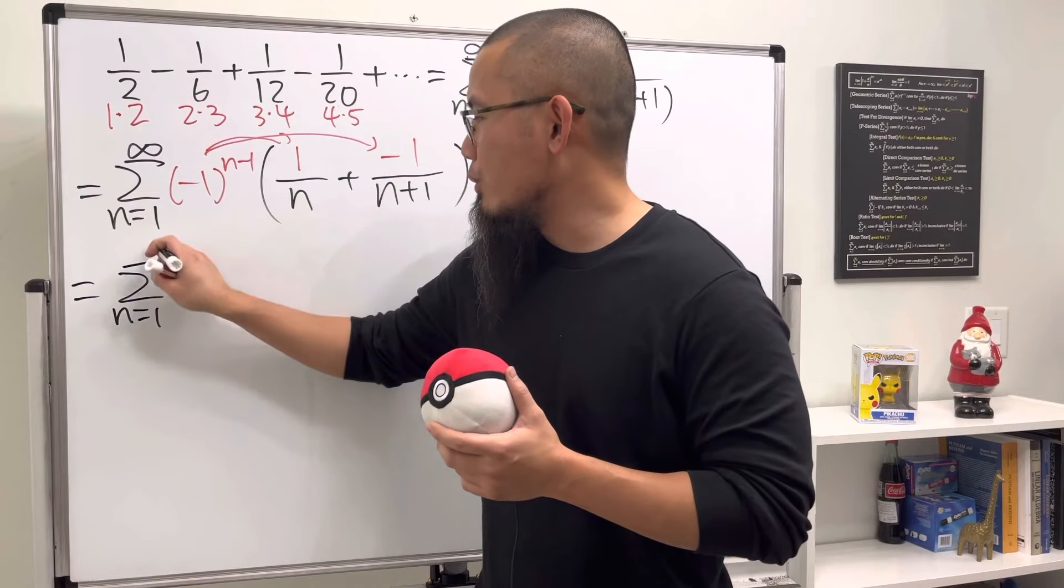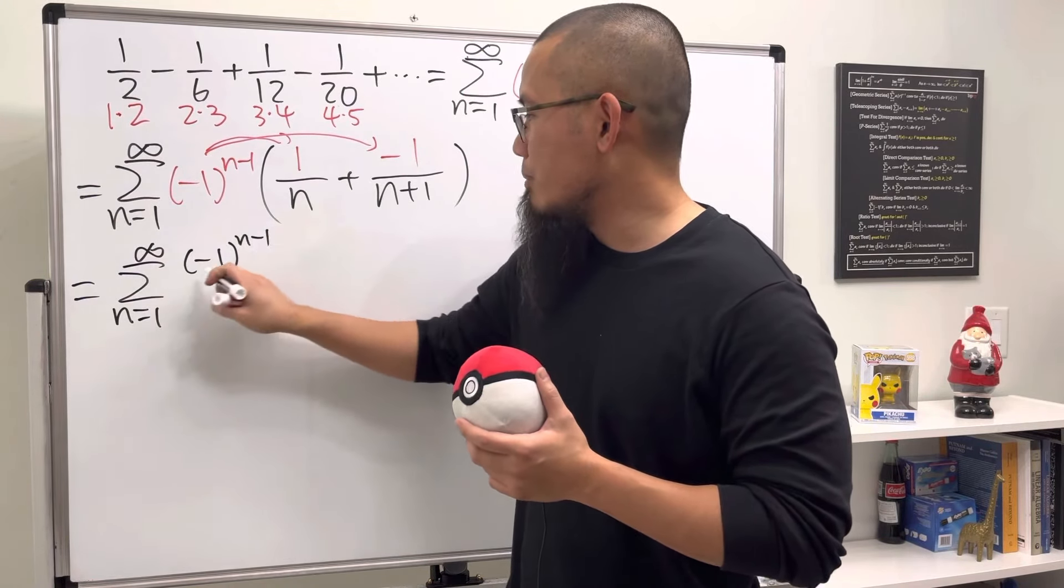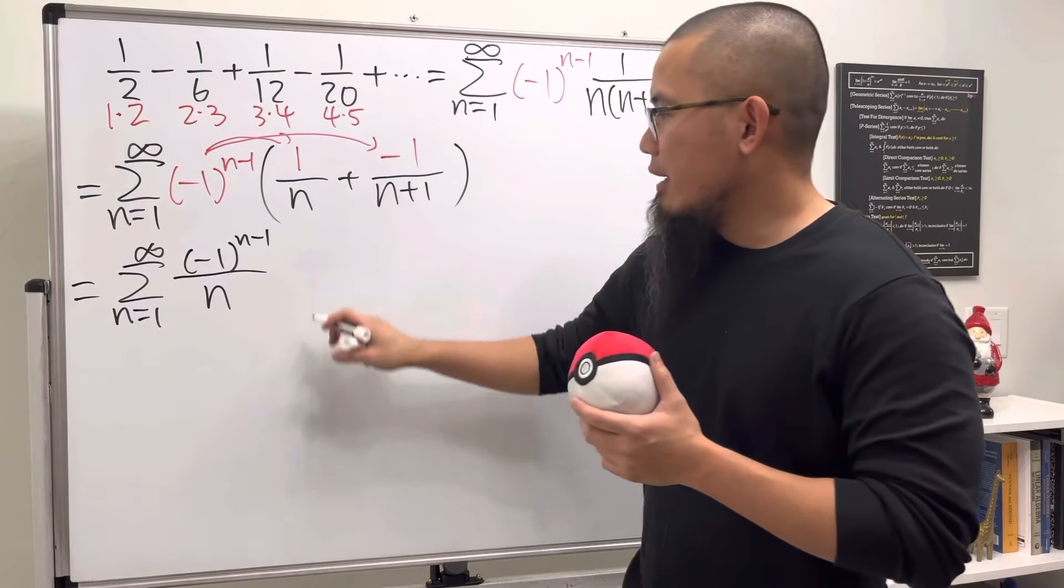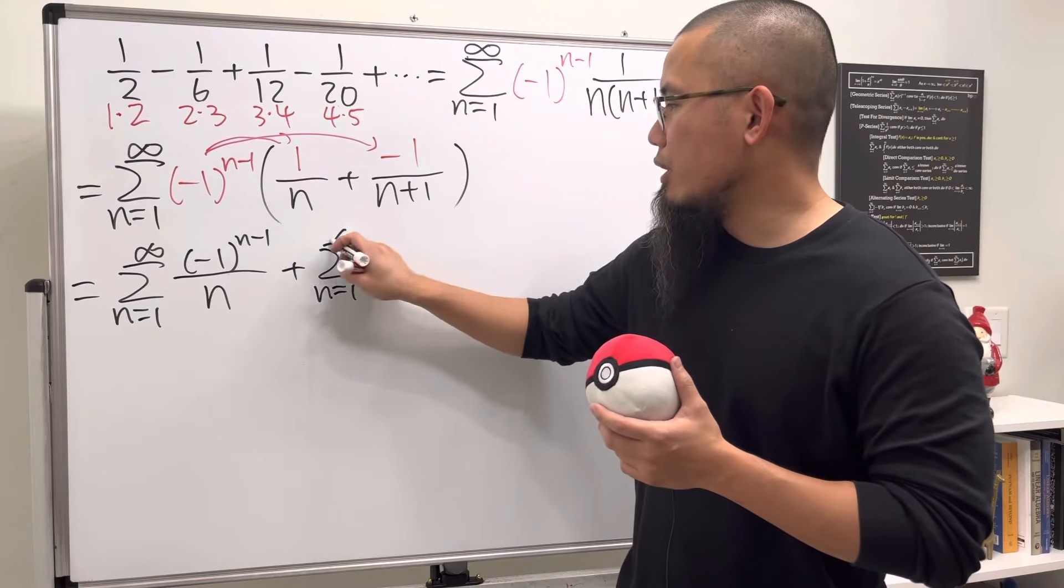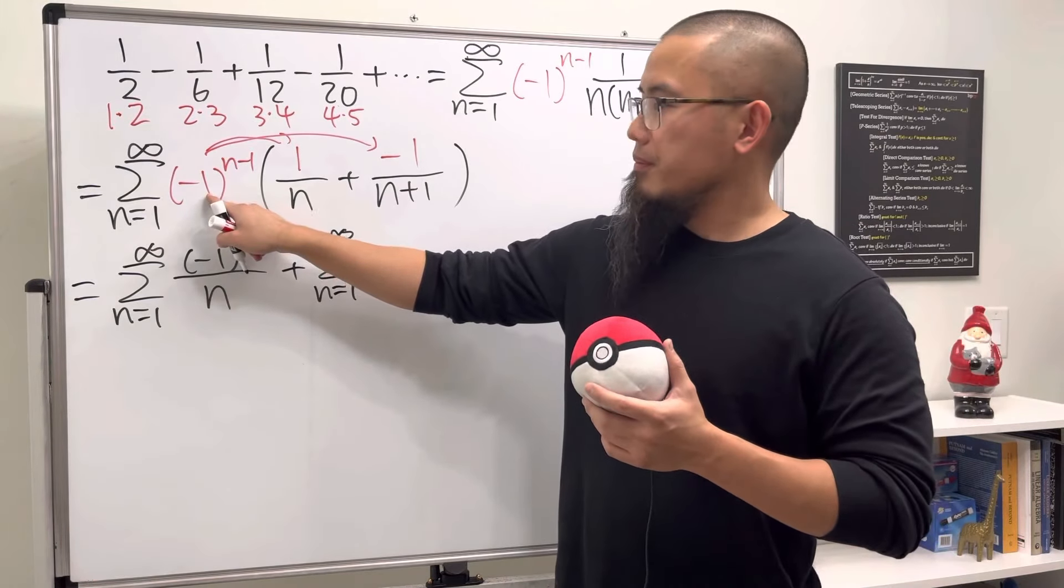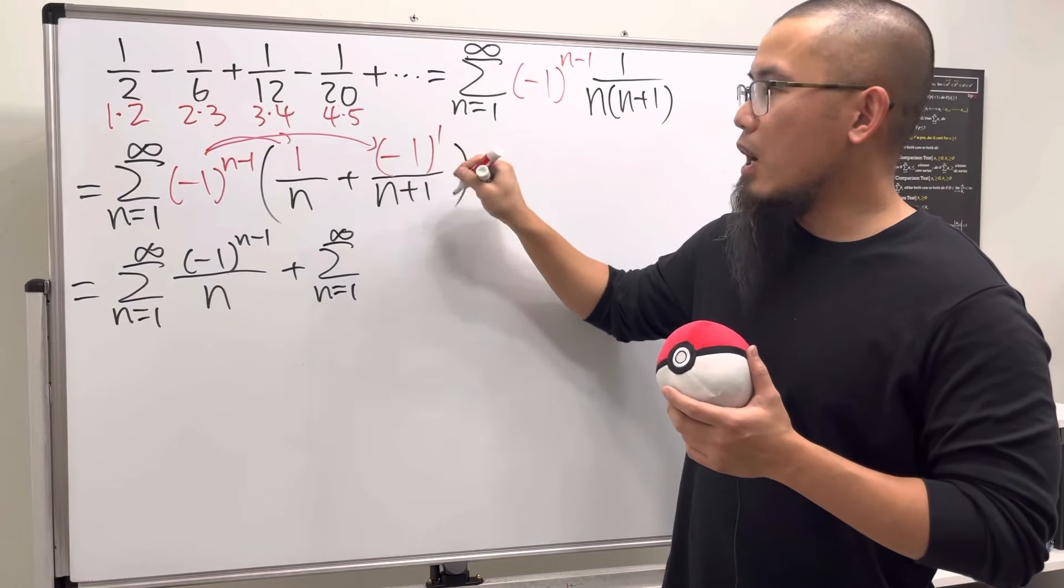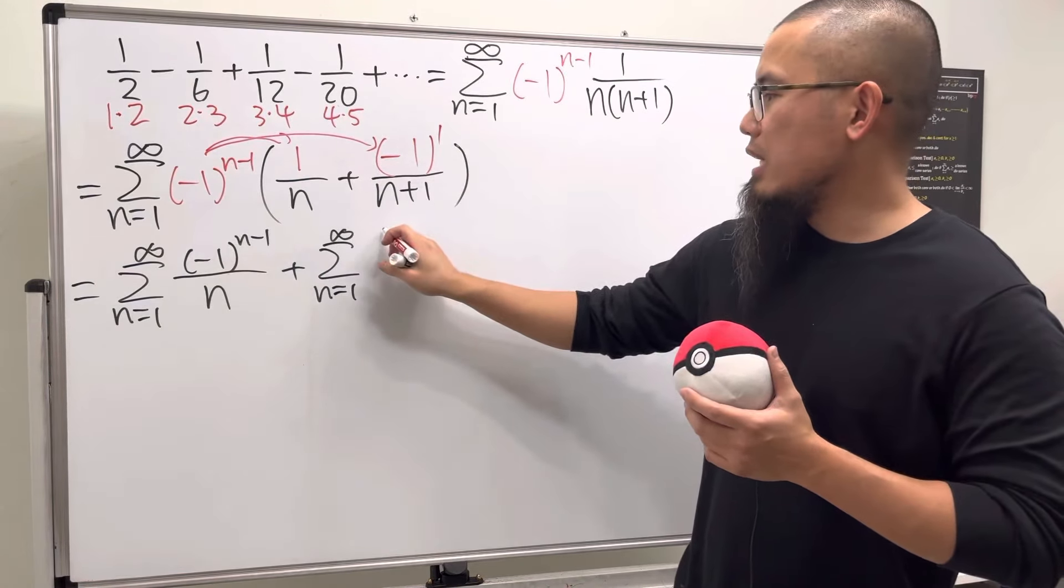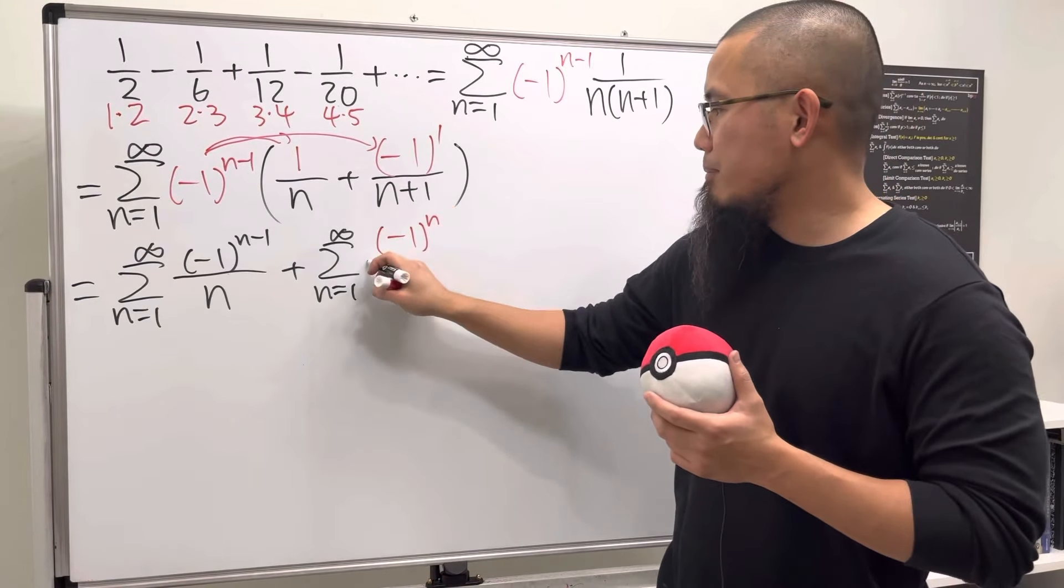But anyway, let's just go ahead and distribute and then separate the sum. So the first one is going to be the sum as n goes from 1 to infinity - this on the top now, which is (-1)^(n-1) over n. And then we're going to add this with the sum as n goes from 1 to infinity. Check this out: (-1) to this power times (-1) to the first power - I'm going to add the exponents, so this becomes (-1)^n only, and then divide it by n+1.